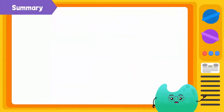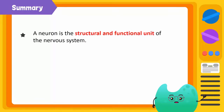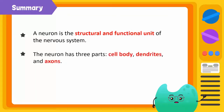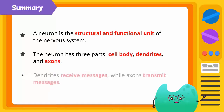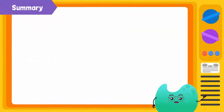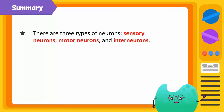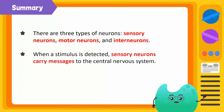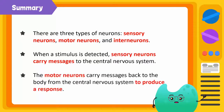To summarize, a neuron is the structural and functional unit of the nervous system. The neuron has three parts: cell body, dendrites, and axons. Dendrites receive messages, while axons transmit messages. There are three types of neurons: sensory neurons, motor neurons, and interneurons. When a stimulus is detected, sensory neurons carry messages to the central nervous system. The motor neurons carry messages back to the body from the central nervous system to produce a response.